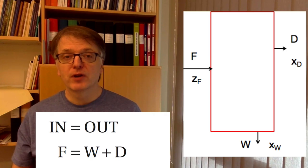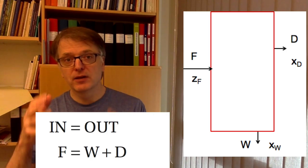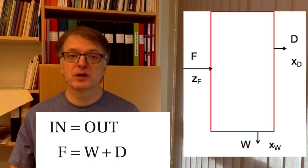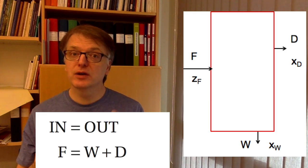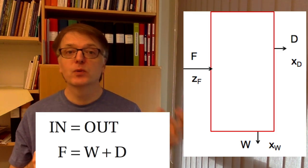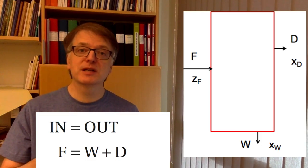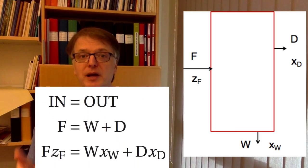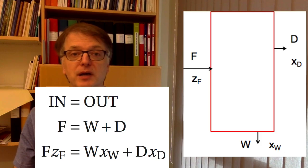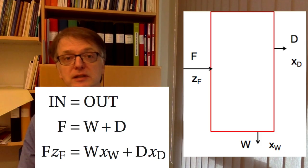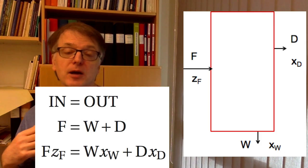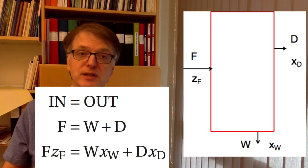What about the volatile component? Well, if you want to calculate how much volatile component you have in the feed, then you have to multiply the total feed with its molar fraction of volatile components, so F times ZF. So the balance for volatile component becomes F times ZF equals D times XD plus W times XW.